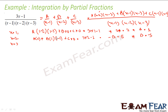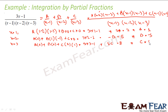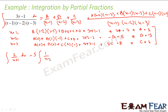Put x = 3: we get C(3 − 1)(3 − 2) = 3(3) − 1, so C(2)(1) = 8, giving 2C = 8, so C = 4. So the values are A = 1, B = −5, C = 4. The integral becomes ∫[1/(x − 1) − 5/(x − 2) + 4/(x − 3)] dx.